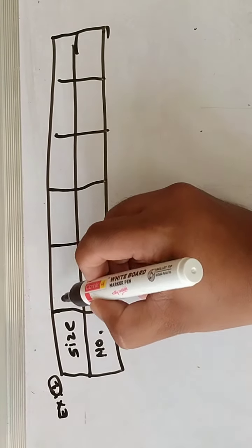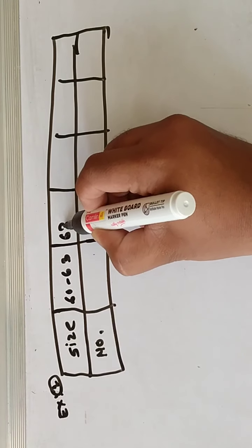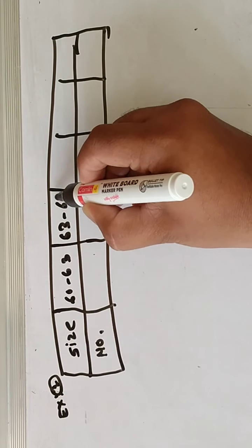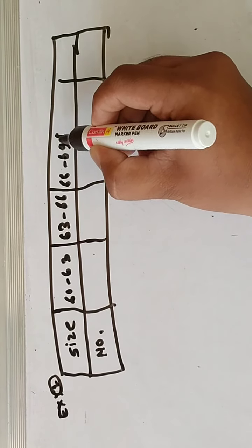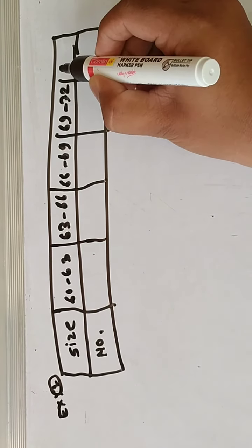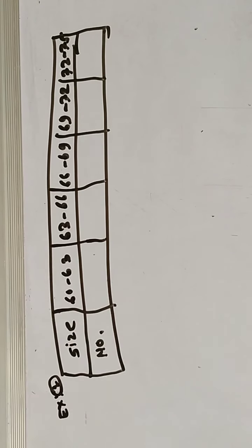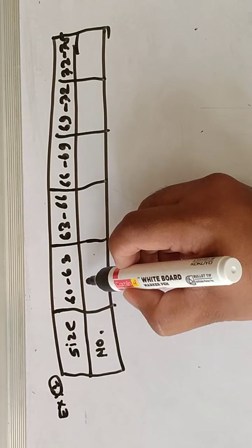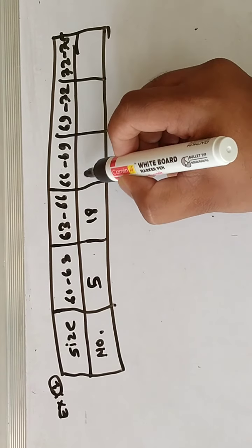First 62 to 63, second class 63 to 66, 66 to 69, 69 to 72, and 72 to 75. Numbers are 5, 18, 42, 27, and 8.